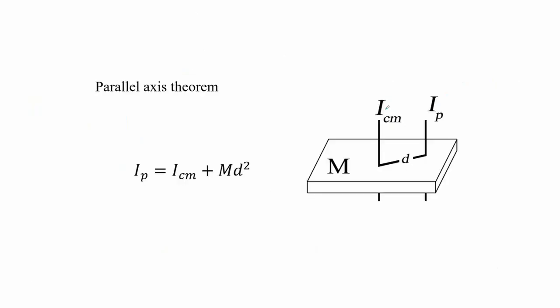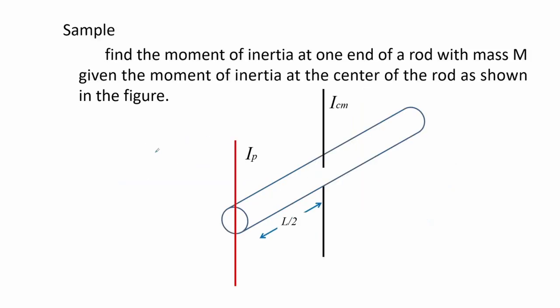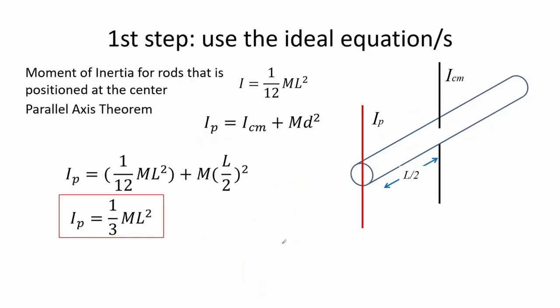The parallel axis theorem allows the user to determine the moment of inertia of an object when the new axis of rotation is parallel to the moment of inertia positioned at the center of mass of the object. In this problem we are asked to find the moment of inertia at one end of a rod with mass m, given the moment of inertia at the center. Using the parallel axis theorem, the moment of inertia at one end equals one-third times mass times the square of its length.